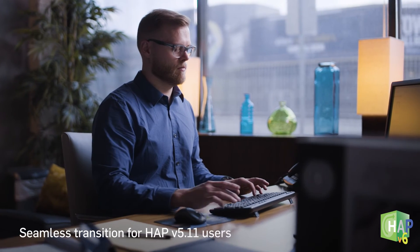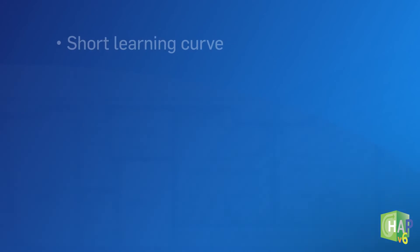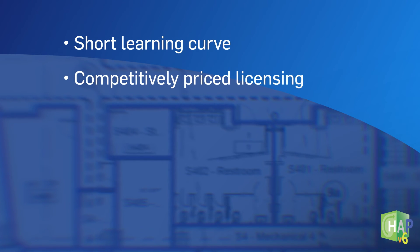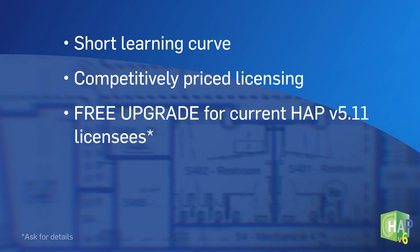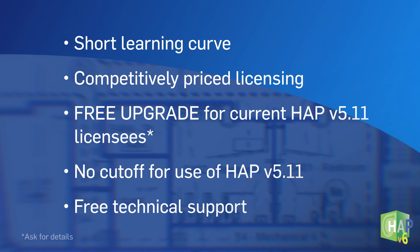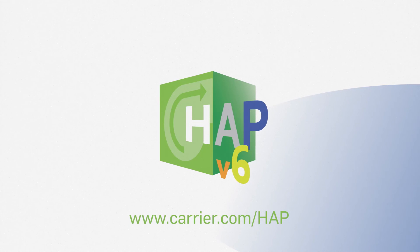HAP6 also provides a seamless transition for HAP version 5 users and a short learning curve for new users. Plus, competitive pricing, a free upgrade for current licensees, and no cutoff for the current version if you wish to continue using it. You'll also enjoy full technical support from the Carrier Software Systems engineering team at no extra charge. To learn more about HAP6, including additional features and benefits, contact your Carrier expert or visit Carrier.com/HAP.